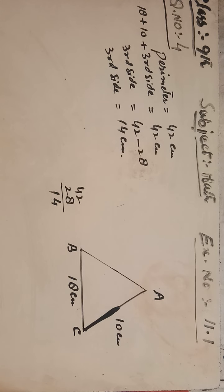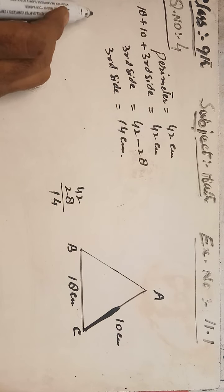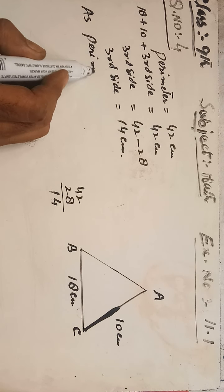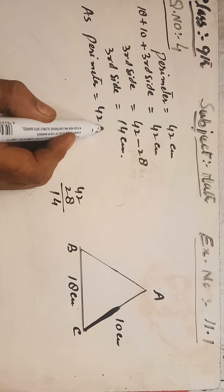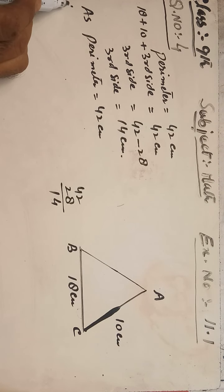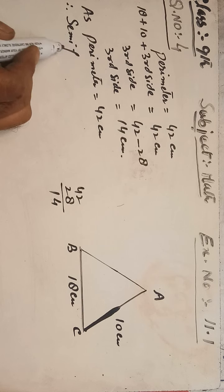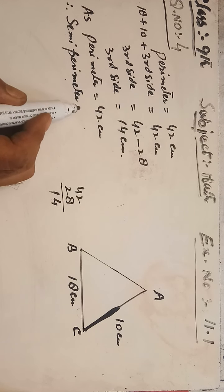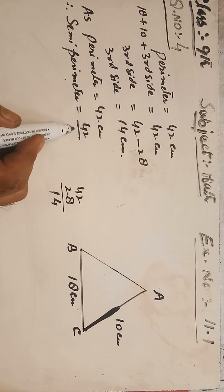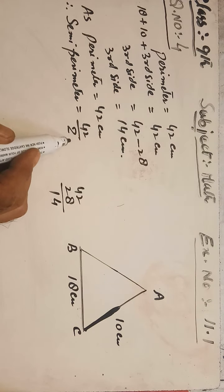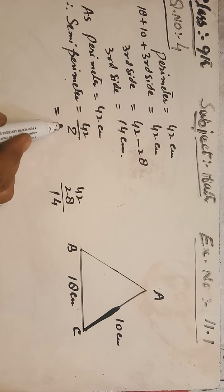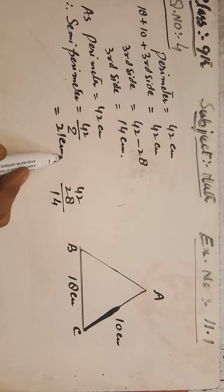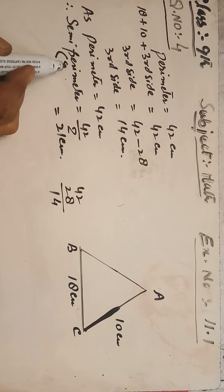Now the semi-perimeter. The perimeter is 42 centimeters, therefore the semi-perimeter equals perimeter divided by two: 42 divided by 2 equals 21 centimeters. So the semi-perimeter is 21 centimeters.